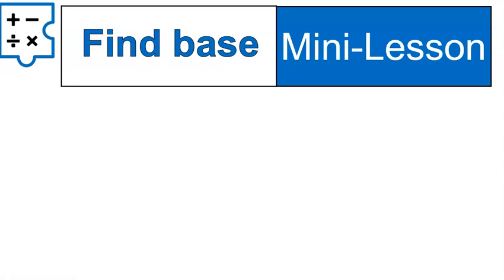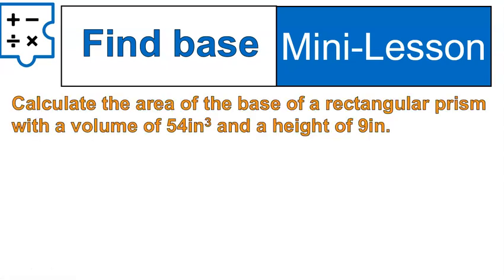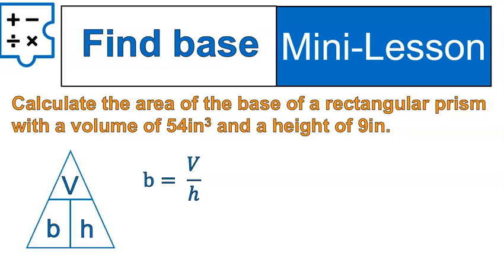In this question, we're going to find the base. We're asked to calculate the area of the base of a rectangular prism with a volume of 54 cubic inches and a height of 9 inches. Using the formulas, you would use this formula: the area of the base, B, is volume divided by height. If you're using that pyramid I suggested at the beginning as a quick reference, you would set it up like that.